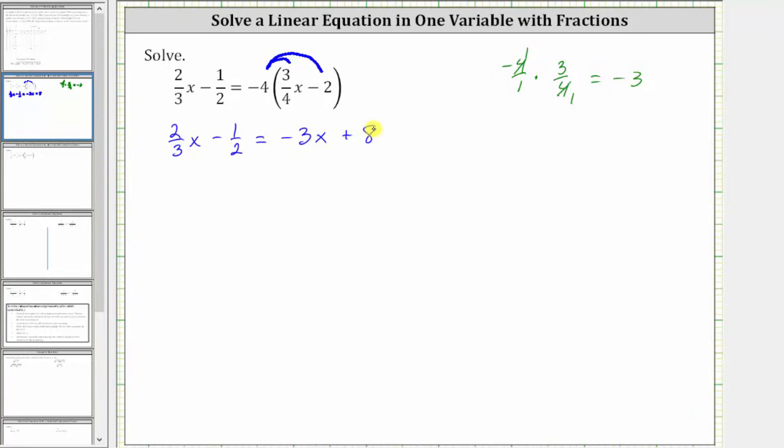The next step is to add or subtract to isolate the variable terms on one side of the equation. Let's undo this negative 3x by adding 3x to both sides.